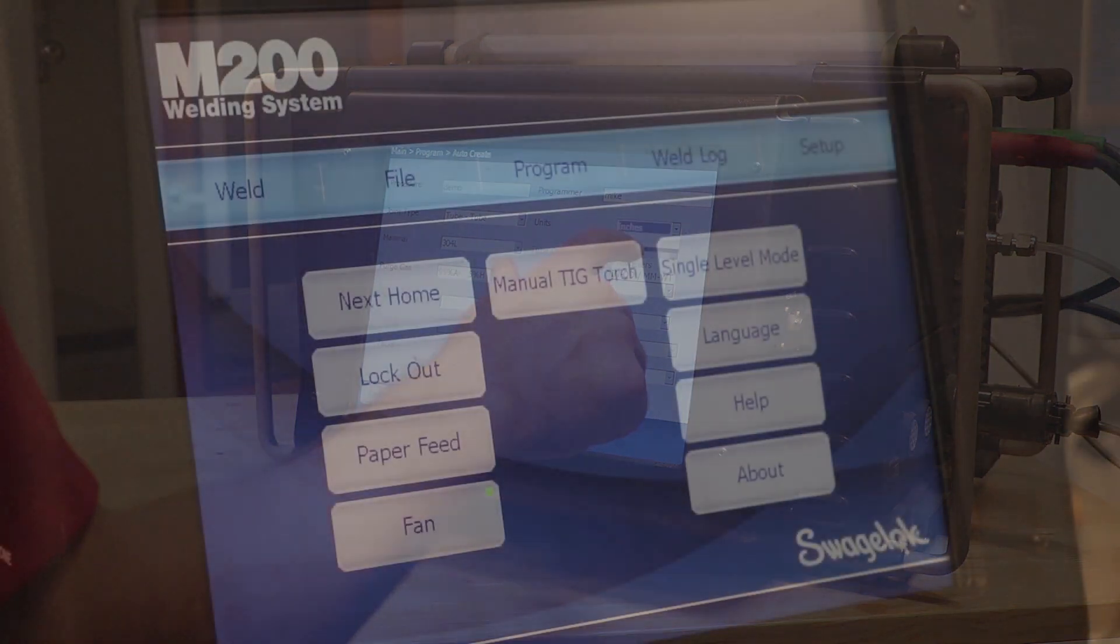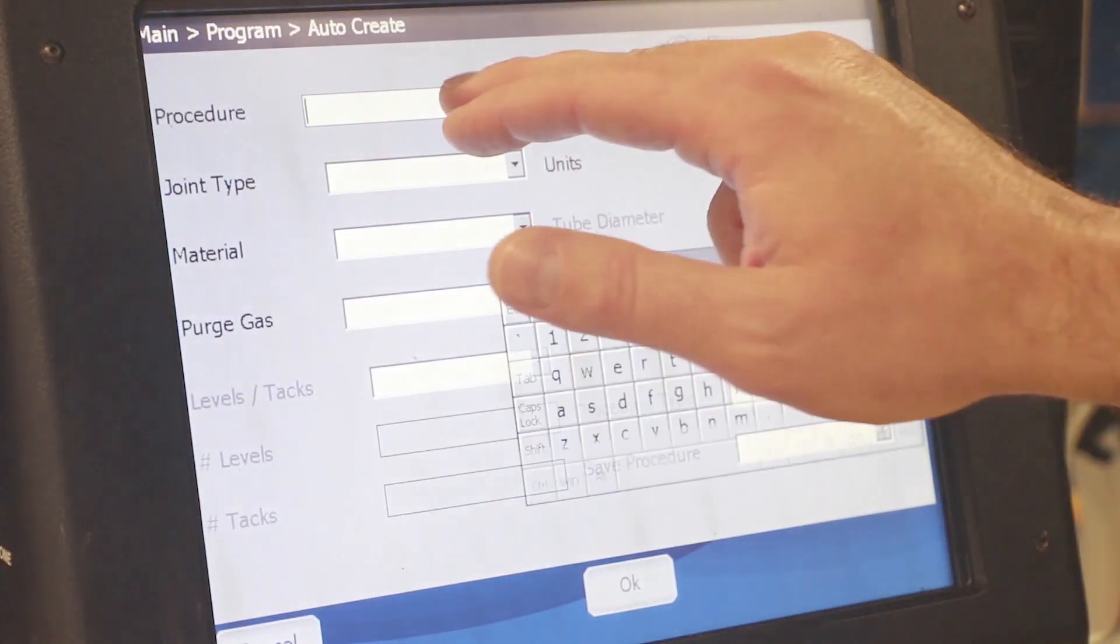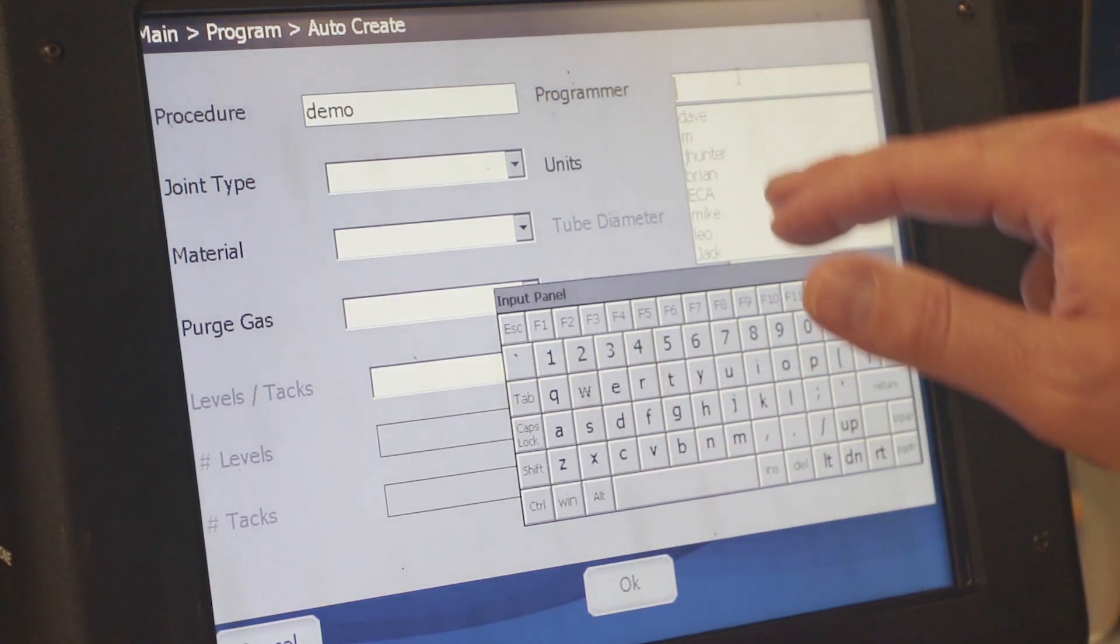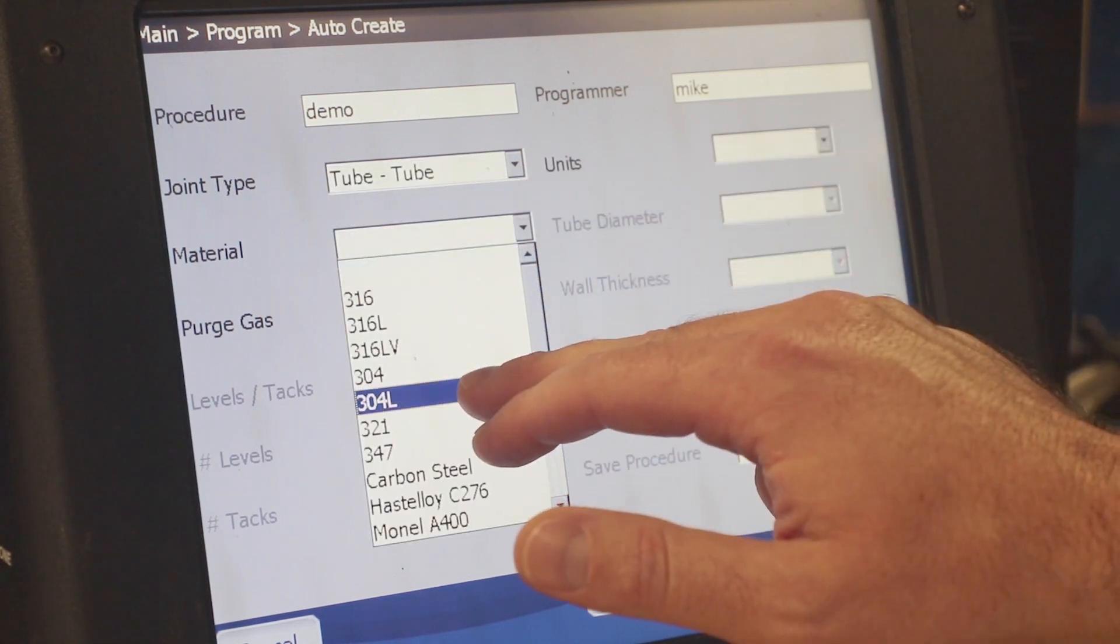One of the best features about the M200 is how easy it is to create a program or procedure for welding. Using the auto create function in the equipment, all that's necessary for the user to provide is the name of the procedure and the name of the programmer.